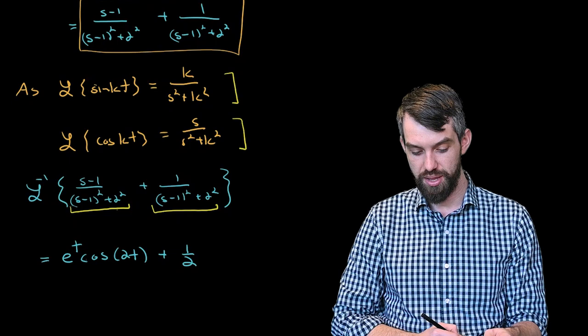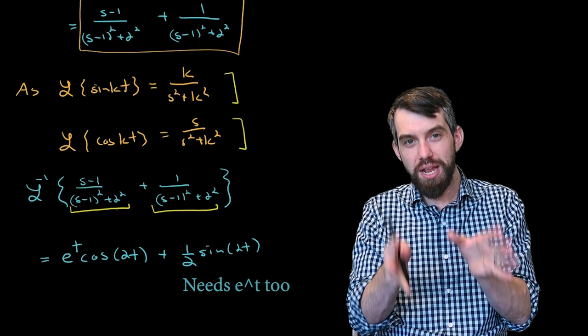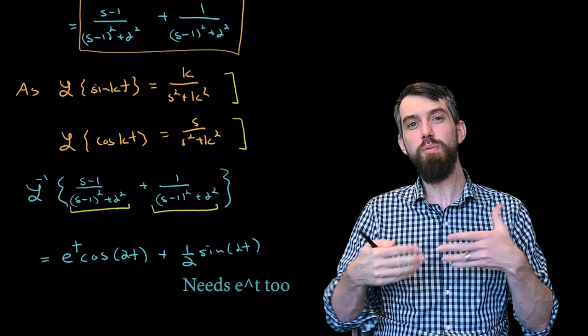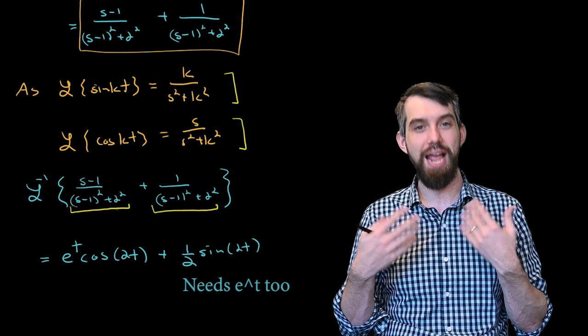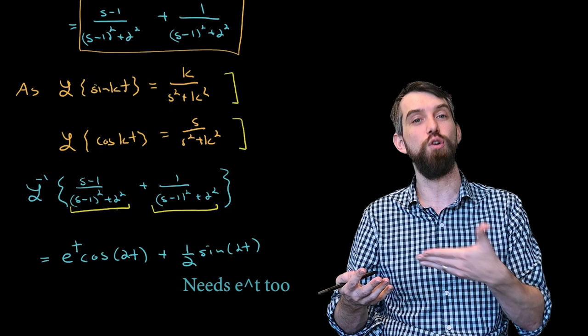In this video, I hope we've gained some practice taking the Laplace transform — and more interestingly, the inverse Laplace transform — of functions. We've seen that when doing inverse Laplace transforms, we want to apply algebraic tricks like completing the square to make what we're given look like something we already know, or something we know together with a translation. In this last example, we had a sine and cosine term, both shifted by the exponential e^t.